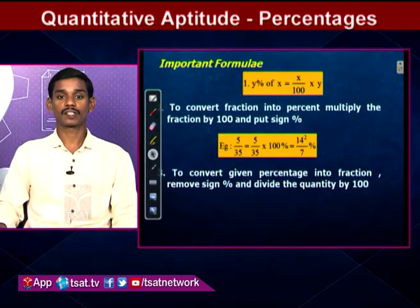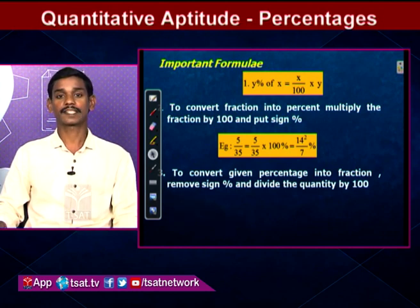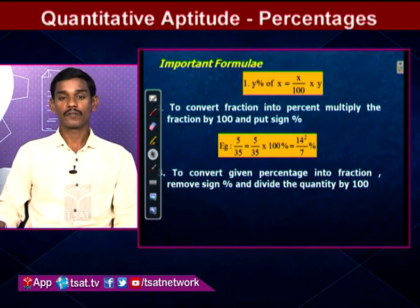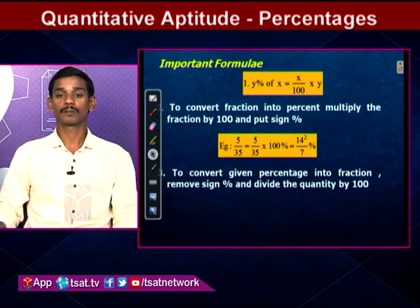Some important formulas: to convert a fraction into a percentage, just multiply the fraction by 100 and put the percentage sign. For example, 5/35 equals 5/35 × 100% which equals 14 and 2/7 percent.